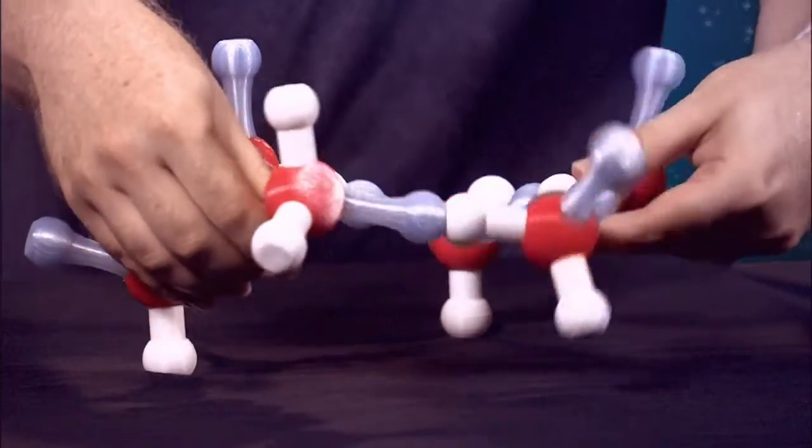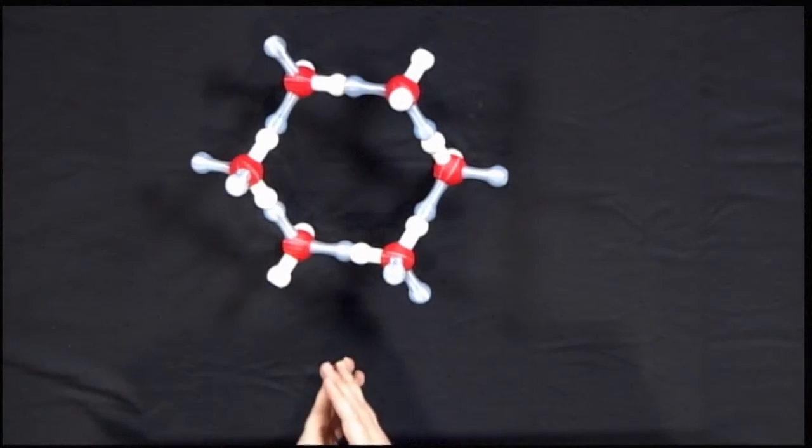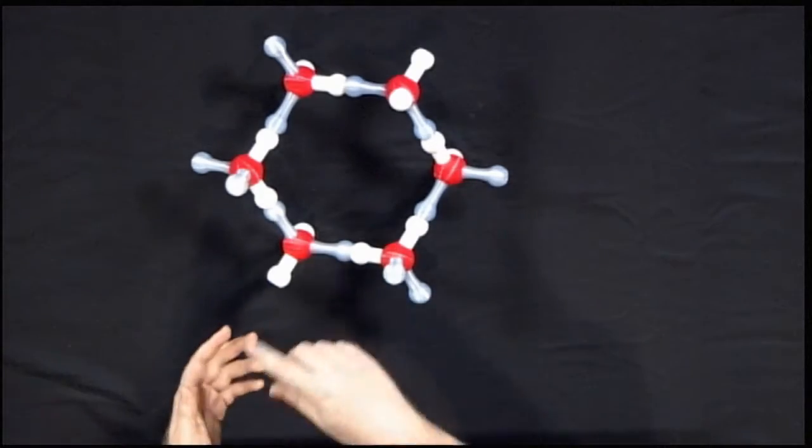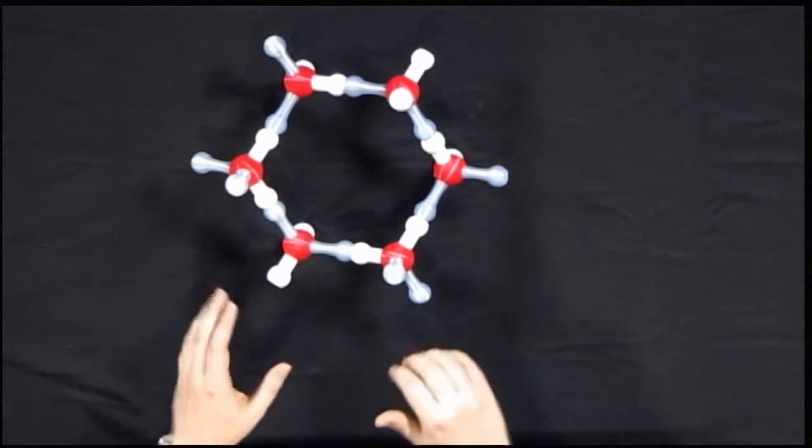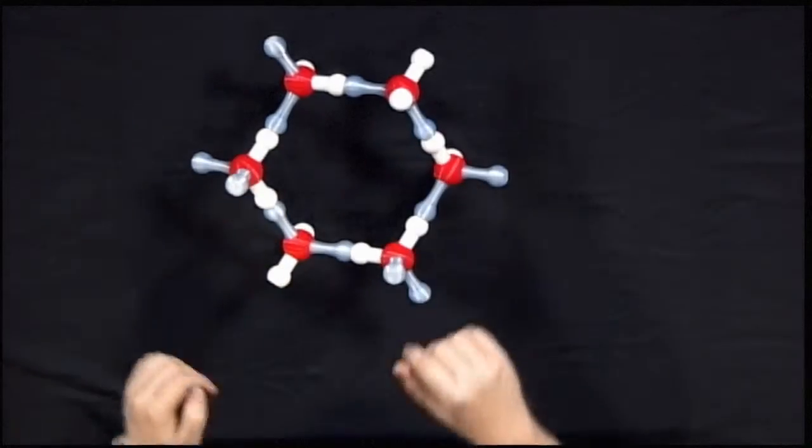All right, so what do we have right here? Right here we have six water molecules coming together, and they form a hexagonal surface. Each one of these water molecules hydrogen bonds to another water molecule right here. And we can see this six-fold shape, a hexagon-type pore right here.